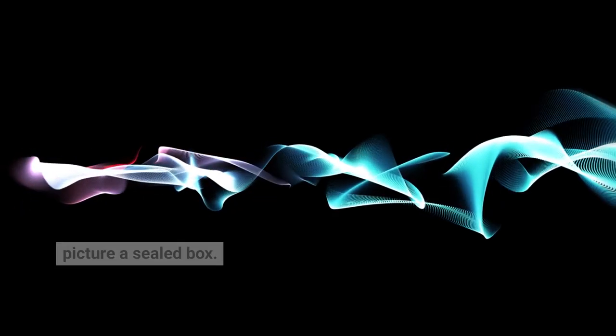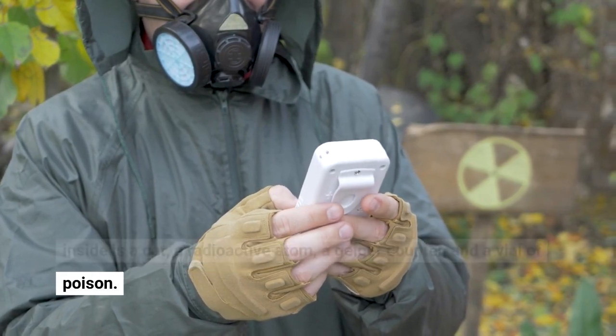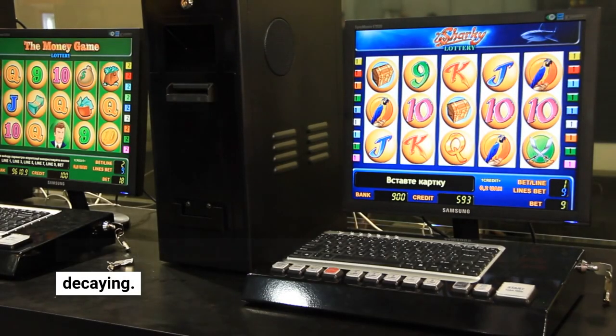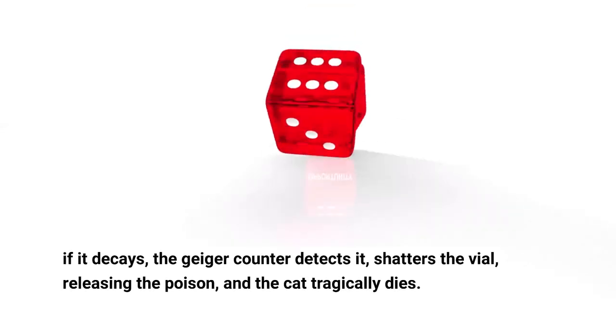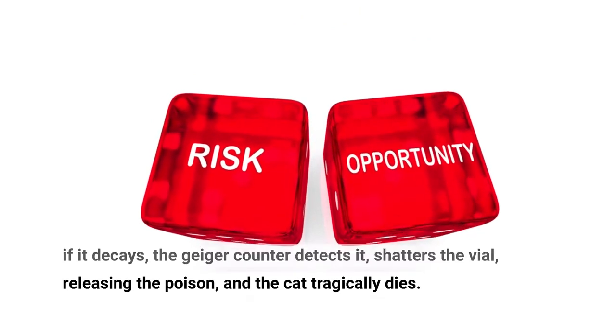Picture a sealed box. Inside is a cat, a radioactive atom, a Geiger counter, and a vial of poison. The radioactive atom has an equal chance of decaying or not decaying. If it decays, the Geiger counter detects it, shatters the vial, releasing the poison, and the cat tragically dies.